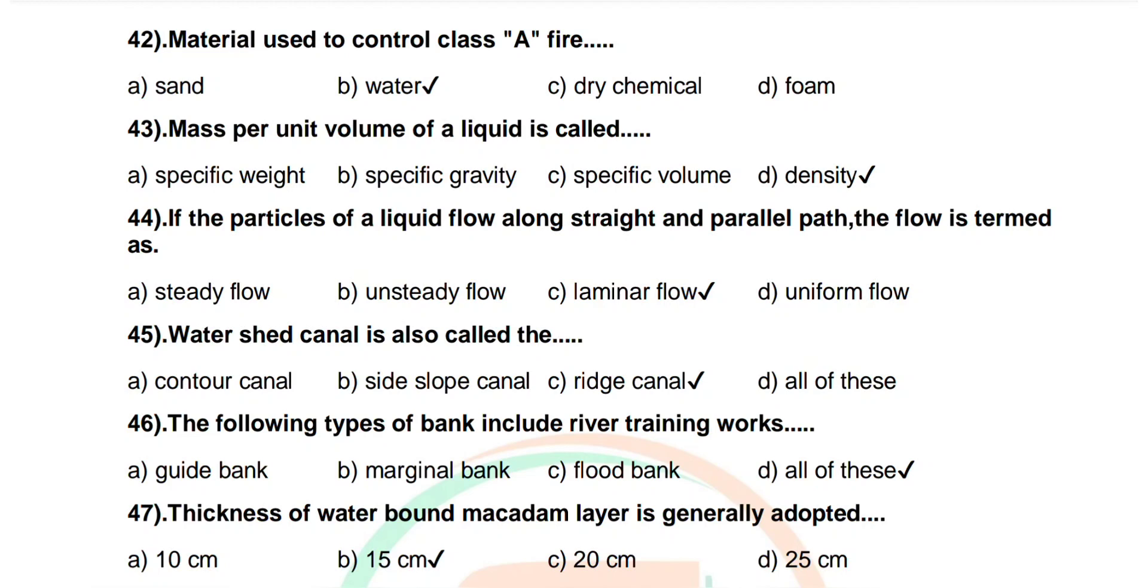Question number 43: Mass per unit volume of a liquid is called. Options are specific weight, specific gravity, specific volume, density. Correct answer: density.